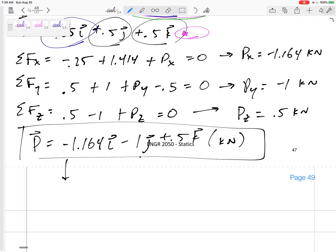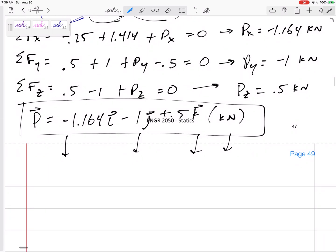So just one quick step, add a page here. The magnitude: 1.164 squared, 1 squared, 0.5 squared, take the square root. The magnitude would be 1.61 kilonewtons.